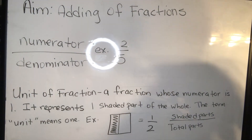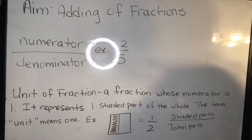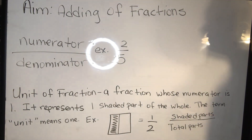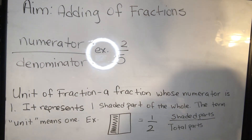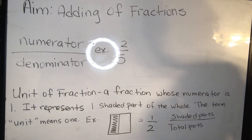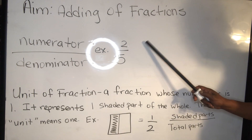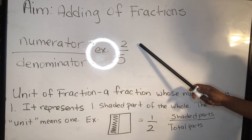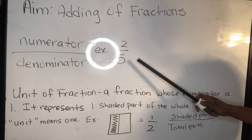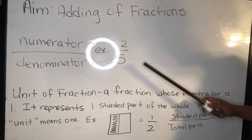Today's aim is adding a fraction. We have our numerator, which is on top, and our denominator, which is on bottom. As you see in our example for two-fifths, the top number is our numerator, and the bottom one is what we call our denominator.